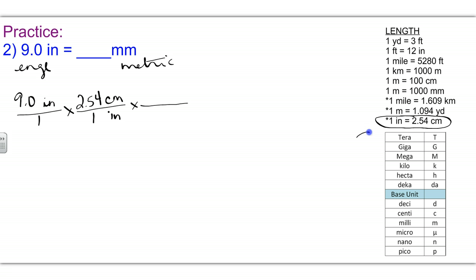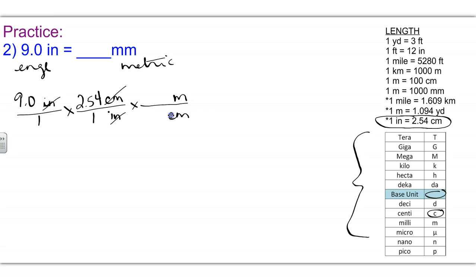Now I'm dealing with metric prefixes. We are at centimeter, and we always want to go to the base, which is going to be meter. So I'm going to bring down centimeter and go to the base, which is meter. Inches have canceled. Which one is bigger? The base unit, meter, is higher up, so I'm going to give meter the 1. Counting from the base to centi: 10, 100. There are 100 centimeters in a meter. Now centimeters have canceled and I'm at meter.